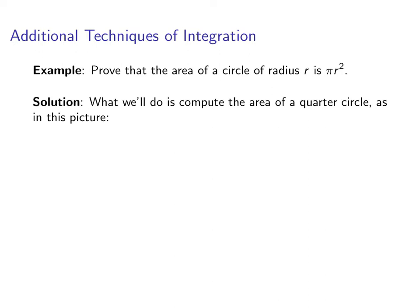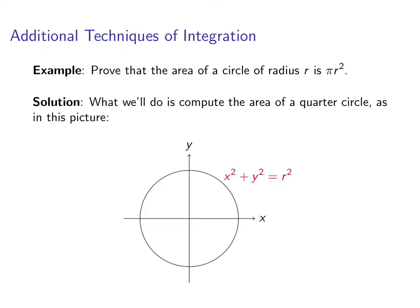Now what we're actually going to do is compute the area of a quarter circle. So let's look at a picture here. Here's a graph of a circle, radius r, centered at the origin. Its equation is given by x squared plus y squared equals r squared. And then we're going to compute this quarter circle's area.